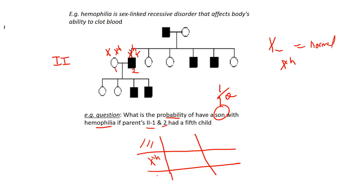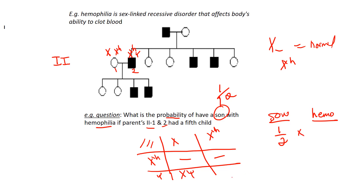Boys go down the side, mums go on top. In this case, all they care about is the sons, so I'm going to skip the daughters. The two son boxes are: XY — normal, and X^h Y — hemophilia. Males are all we care about for sex-linked.